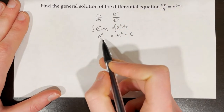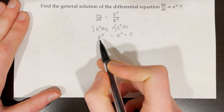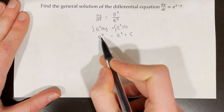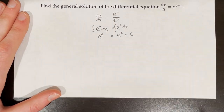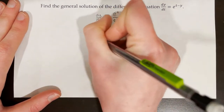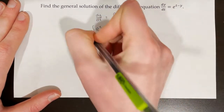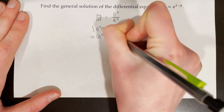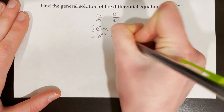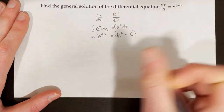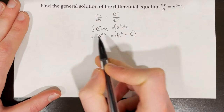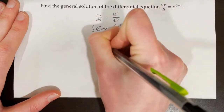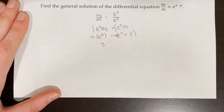Now to isolate y, we need to cancel out e to the power of something. We simply take the natural log of both sides. The natural log of e^y is just y, giving y = ln(e^t + c).